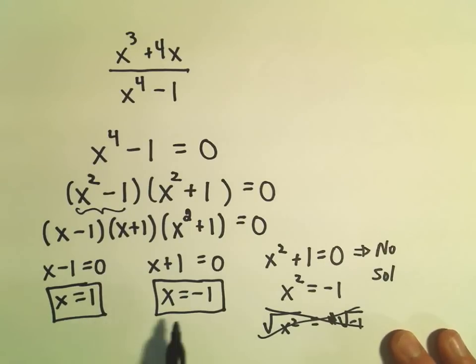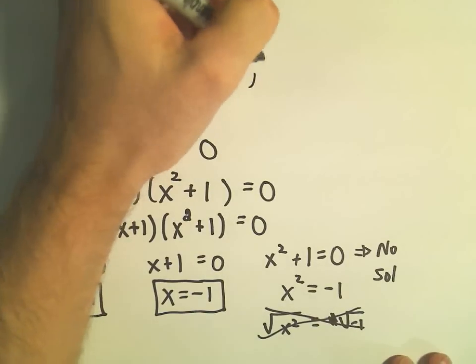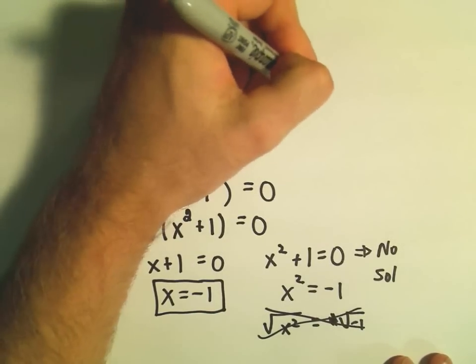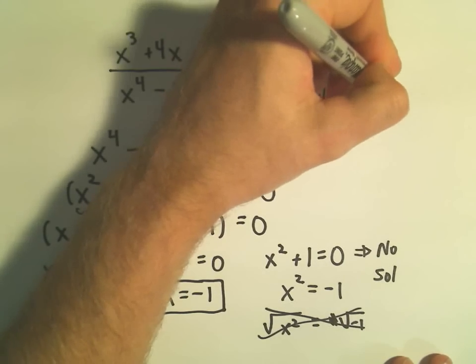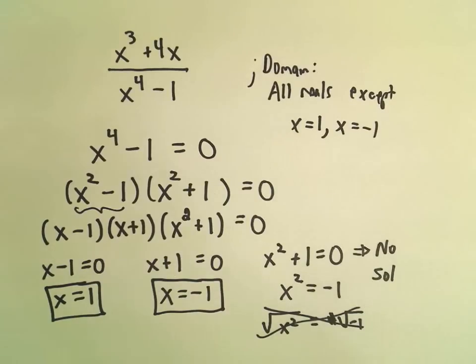So it says, the only values that will produce zero in the denominator are positive 1 and negative 1. So again, it says the domain would be all reals except x equals positive 1 and x equals negative 1.